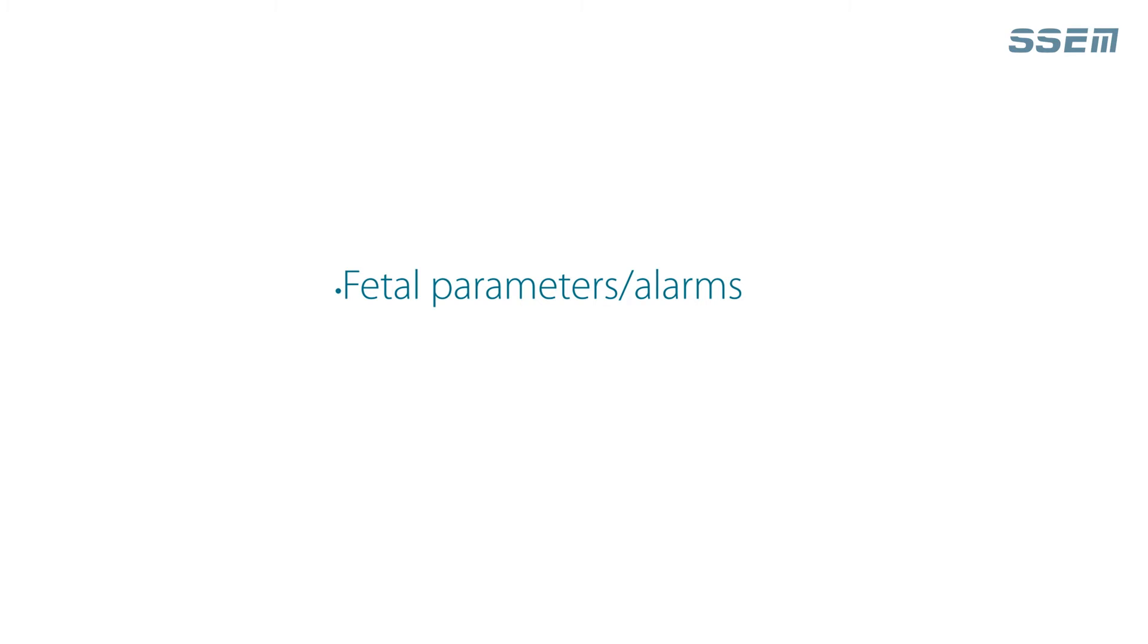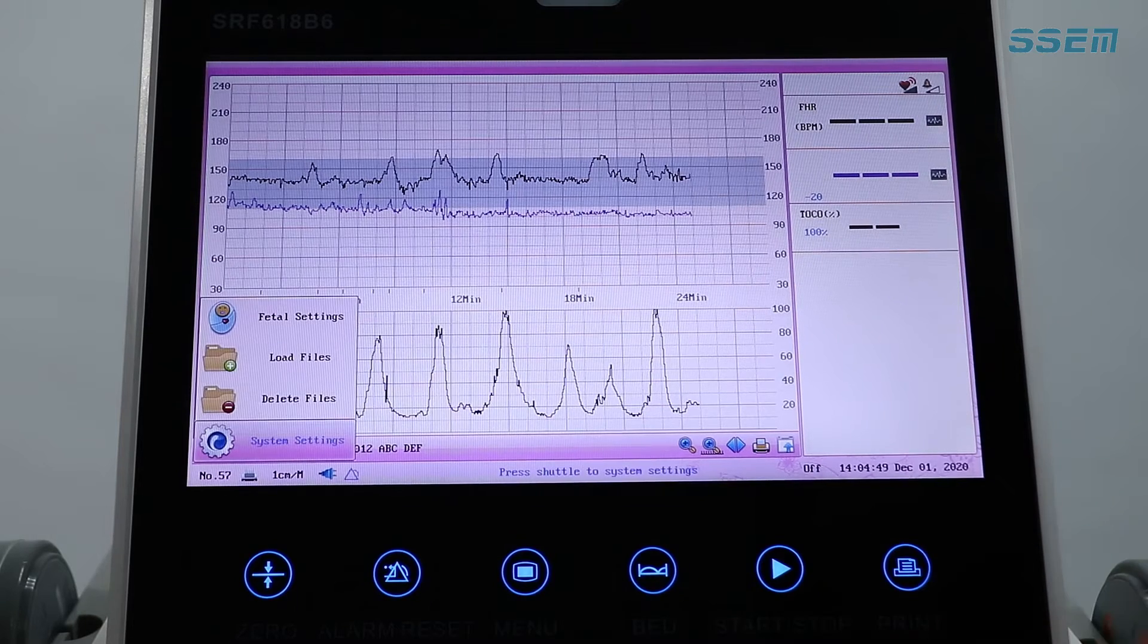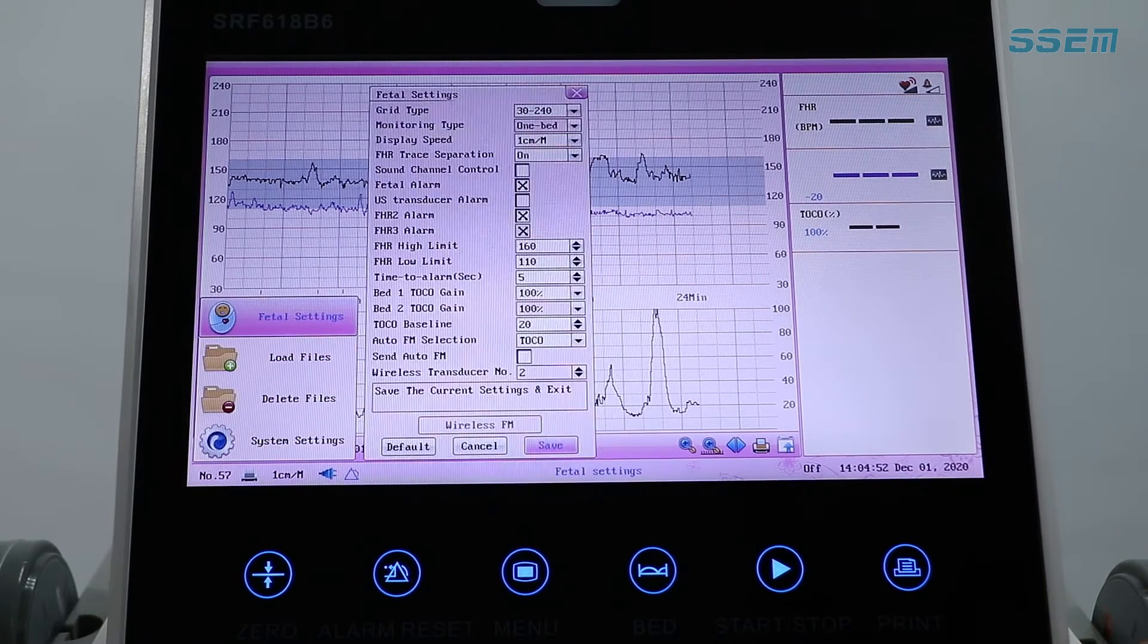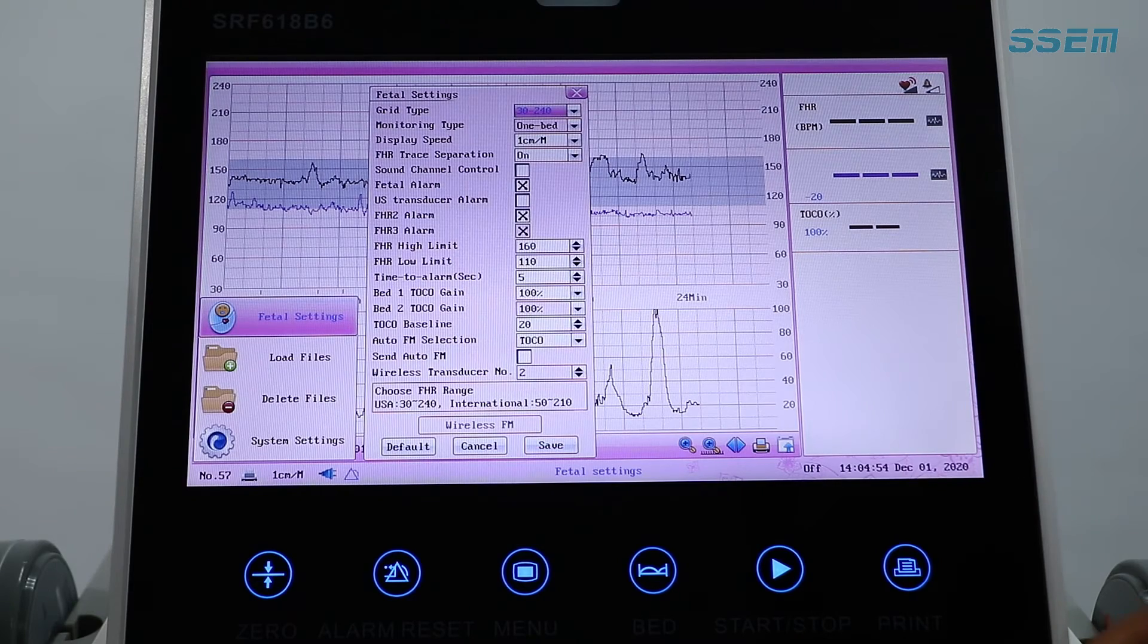Setting fetal parameters or alarms and ensuring that your screen display is the same as your printing time. Do this by press menu, go to fetal settings, change the grid type to 30 to 240.